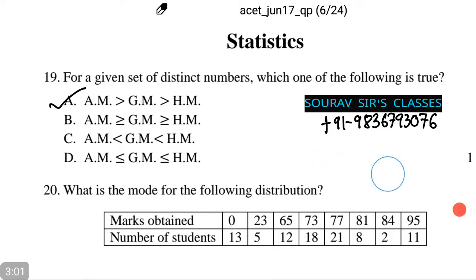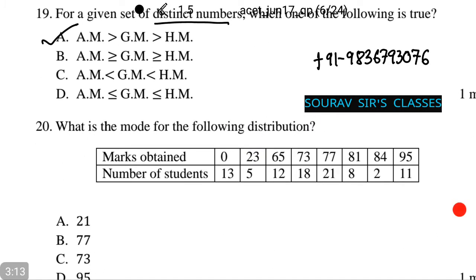Thus, option A is the truth for the given set of distinct numbers. Now, the next question is one of the most favorite questions for students. What is the mode of the following distribution?